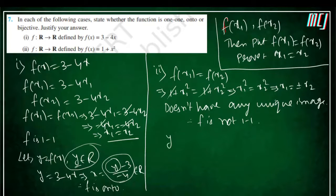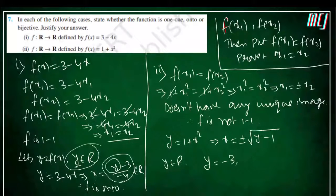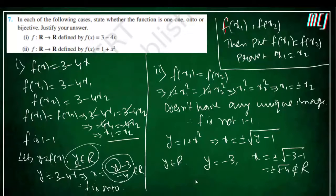Now we check onto. y = 1 + x², so x = ±√(y − 1). Since y belongs to real numbers, y can be negative. If we take y = −3, then x = ±√(−3 − 1) = ±√(−4), which is a complex number and does not belong to real numbers. So f is not onto.